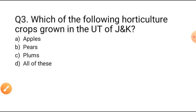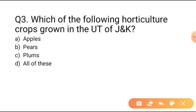Question number three: Which of the following horticulture crops are grown in the UT of Jammu and Kashmir? Option A: Apples. Option B: Pears. Option C: Plums. Option D: All of these. Apples, pears and plums are the horticulture crops grown in Jammu and Kashmir, so Option D is the correct answer.